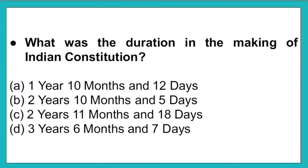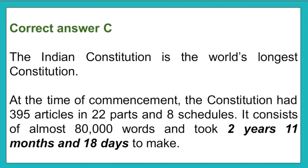The next question: What was the duration in the making of the Indian constitution? Option A: 1 year, 10 months, and 12 days. Option B: 12 years, 10 months, and 5 days. Option C: 2 years, 11 months, and 18 days. Option D: 3 years, 6 months, and 7 days. The correct answer is option C. The Indian constitution is the world's longest constitution. At commencement it had 395 articles in 22 parts and 8 schedules, consisting of almost 80,000 words, and took 2 years, 11 months, and 18 days to make.